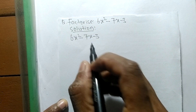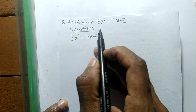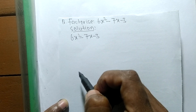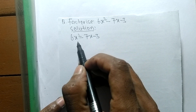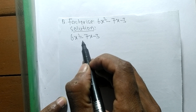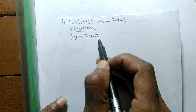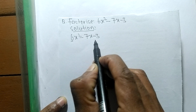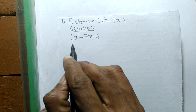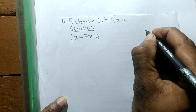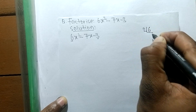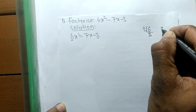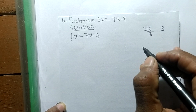So today in this video, we shall learn to factorize 6x² minus 7x minus 3. For the solution, first we have to find out the prime factors of the first and last number. The prime factors of 6 are 2 and 3, and the prime factors of 3 is 3.